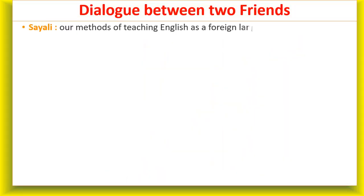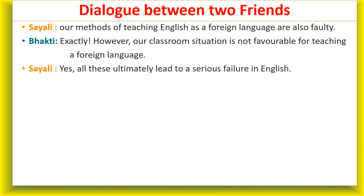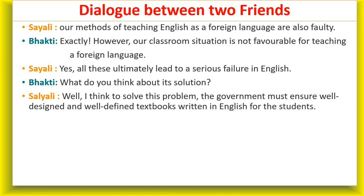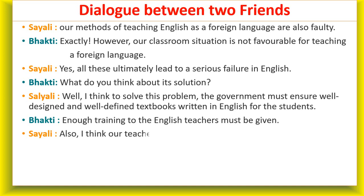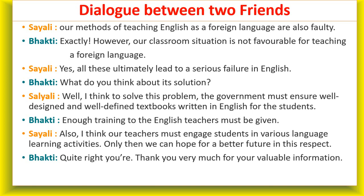Saili said: Our methods of teaching English as a foreign language are also faulty. Bhakti said: Exactly. However, our classroom situation is not favorable for teaching a foreign language. Saili said: Yes, all these ultimately lead to serious failure in English. Bhakti said: What do you think about its solution? Saili said: The government must ensure well-designed and well-defined textbooks written in English. Bhakti said: Enough training to English teachers must be given. Saili said: Our teachers must engage students in various language learning activities — only then we can hope for a better future.